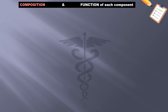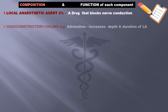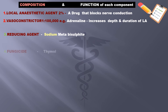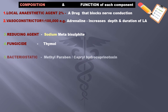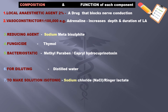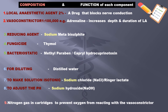To finish, here is a brief summary of each component and its function: Local anesthetic agent — a drug that blocks conduction. Vasoconstrictor (e.g., adrenaline) — increases depth and duration of LA. Reducing agent — sodium metabisulfite. Fungicide — thymol. Bacteriostatic — methylparaben or caprylhydroxyquinoline. For diluting — distilled water. To make the solution isotonic — sodium chloride or Ringer's lactate solution. To adjust pH — sodium hydroxide. Nitrogen gas in cartridges — to prevent oxygen from reacting with the vasoconstrictor.